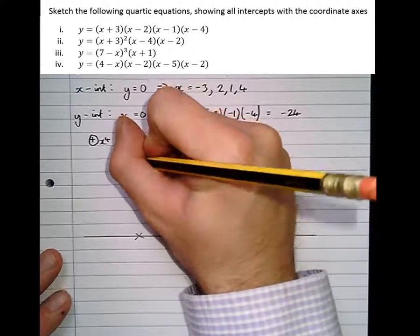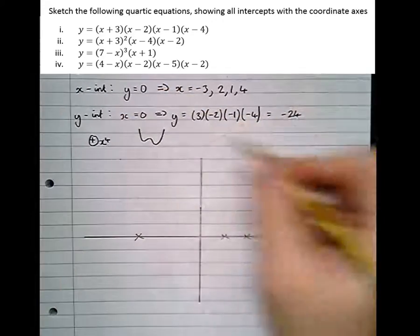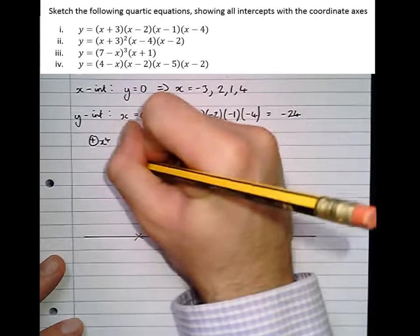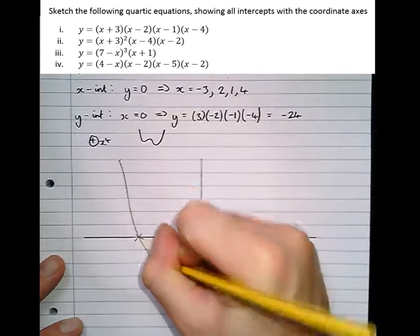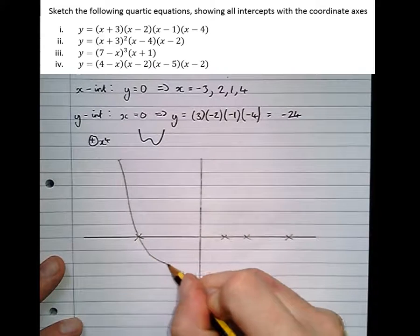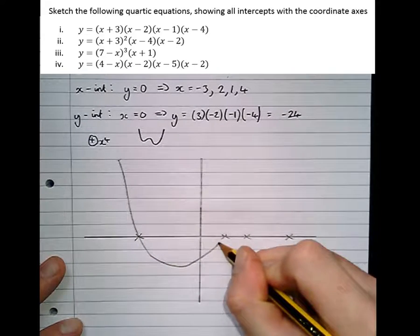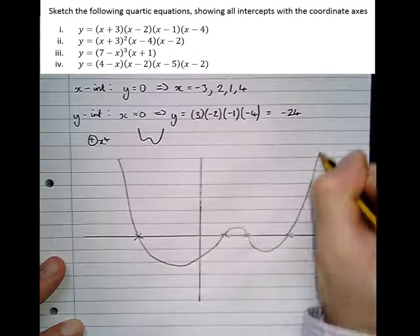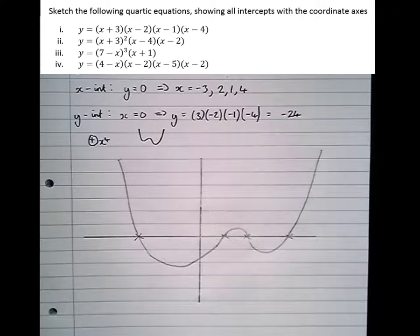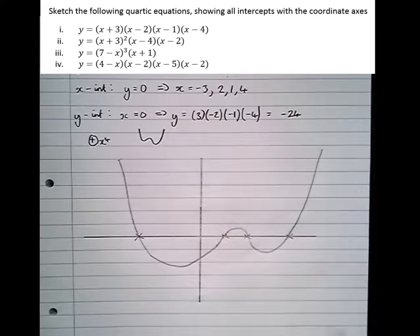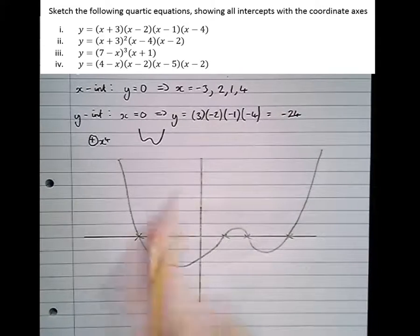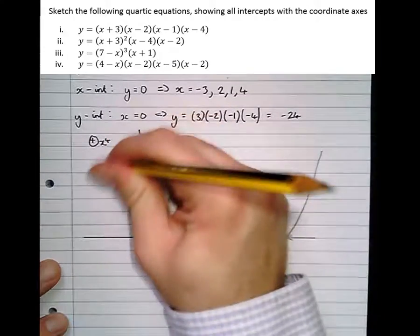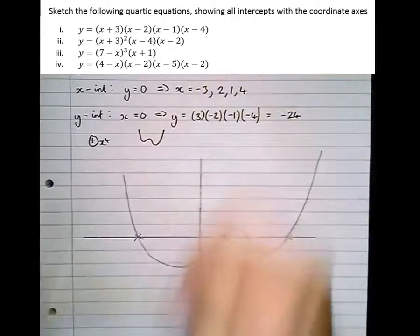So sketching it, start at the top left because it's a positive quartic, so it starts in the same place that a quadratic would. Through there, back up again through the next root, back down again through the next root, back up again through the next root. Now one thing I don't like about this graph, there's two features of it actually that I don't like. Here, this sort of suggests that the graph is going to curve round a bit, it's curving to the left a bit, we don't want that.